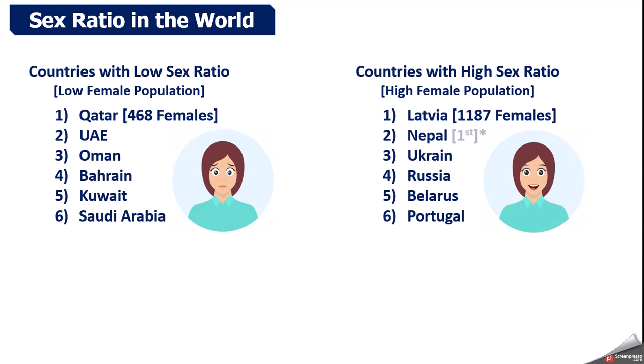On the other side, there are countries where the number of females is more than males. In Latvia there are 1187 females per 1000 males. Then Nepal, Ukraine, Russia, Belarus, Portugal — most of them are European countries.